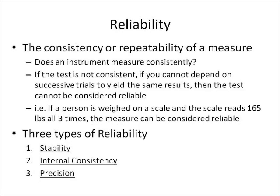Reliability is the consistency or repeatability of a measure. The question is: does an instrument measure consistently? If the test is not consistent and you cannot depend on successive trials to yield the same results, then the test cannot be considered reliable. For example, if a person is weighed on a scale and it reads 165 all three times, the measure can be considered reliable. The three types of reliability are stability, internal consistency, and precision.